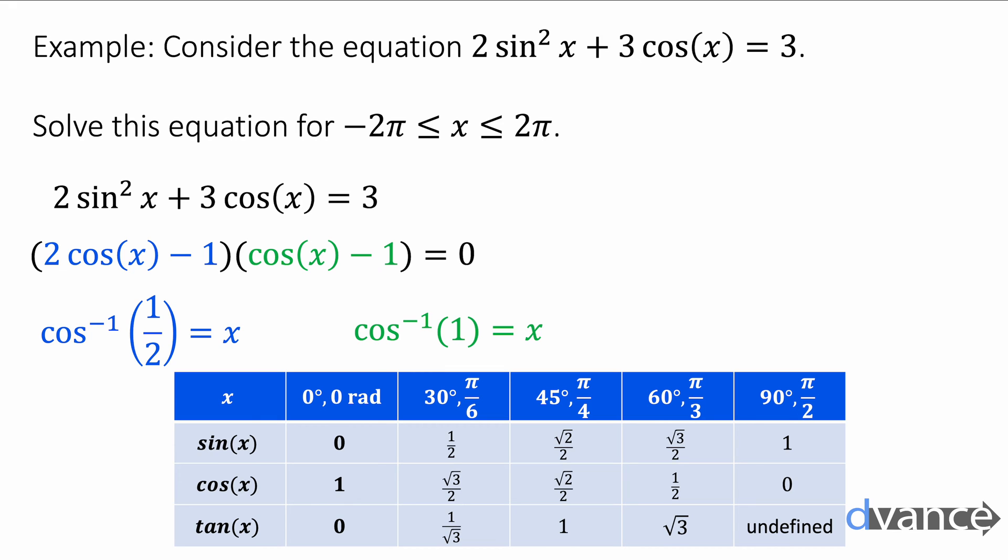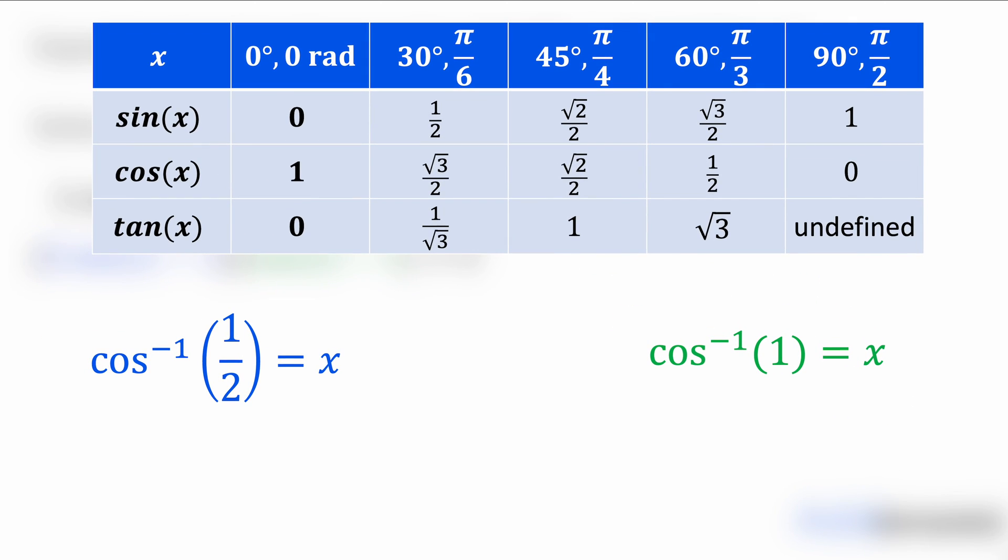Now to solve this I need to memorize my table of special angles and I've got that table here. This is the table you need to memorize of all your special angles. If this is a calculator exam you can just do inverse cos of 1/2 and get the answer using the calculator, but this is probably a non-calculator exam so we need to use our knowledge of special angles. We're interested in when cos⁻¹(1/2) equals x. I'm going to highlight 1/2 on the table and that's when x = π/3. Also when cos⁻¹(1) equals x, I'm highlighting cos of 1 and that's when x is 0 as well. So I've got x = π/3 or x = 0. I've only got two solutions.